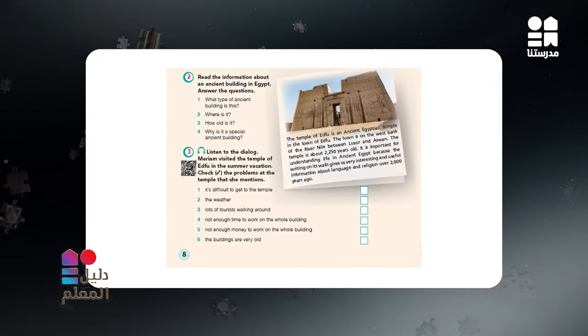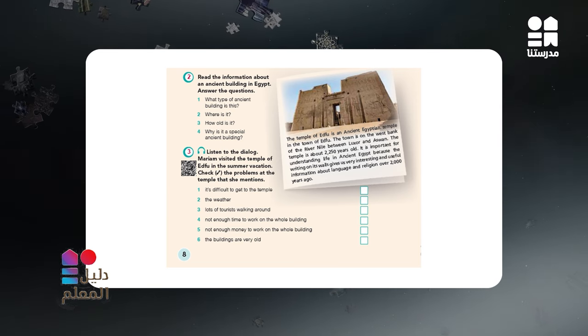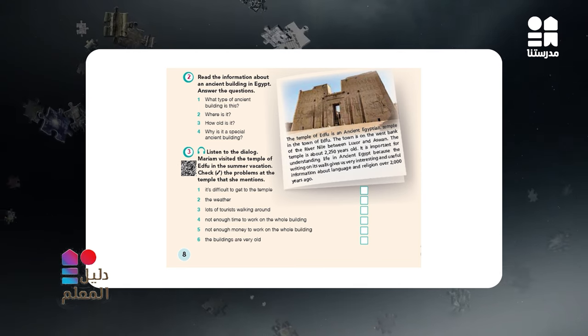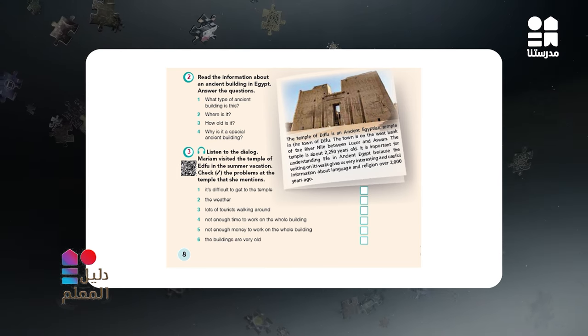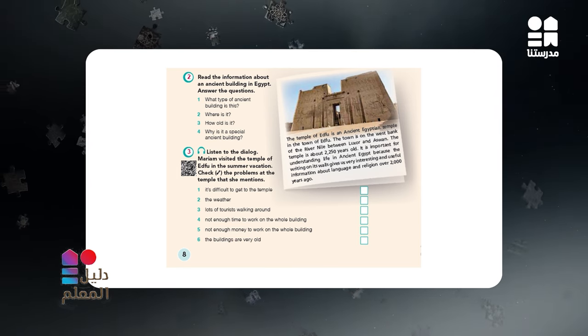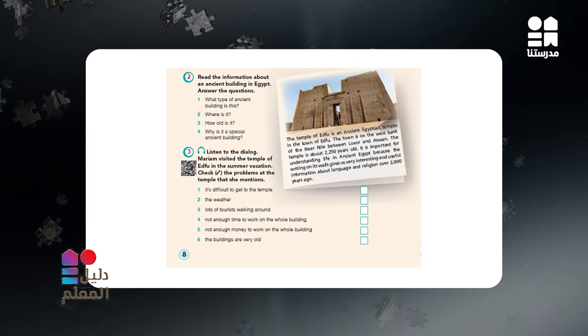For Exercise 2, students are to read a text about an ancient building to answer some WH questions, reading or scanning for details. At the same time, the exercise provides an introduction to one ancient building, showing its importance and getting students to appreciate its value — an important value: appreciate national heritage. Encourage students to read the text and tell students to underline the keywords. This will help them find the answers quickly in the text.